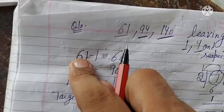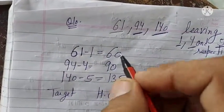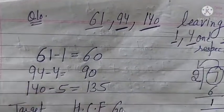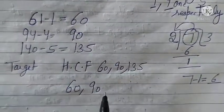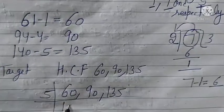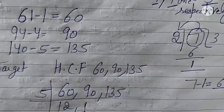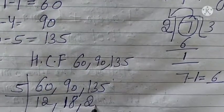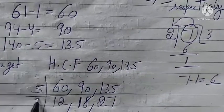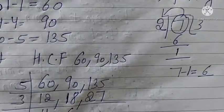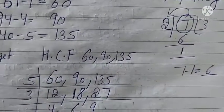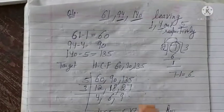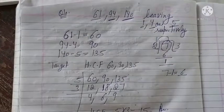Our target is to find the HCF — the highest common factor — that is, the highest number that divides 60, 90, and 135. Using the common division method, we can go on the table of 5: getting 12, 18, and 27. Then dividing by 3: getting 4, 6, and 9. The HCF is 5 × 3 = 15. So 15 is the maximum number that divides 60, 90, and 135.